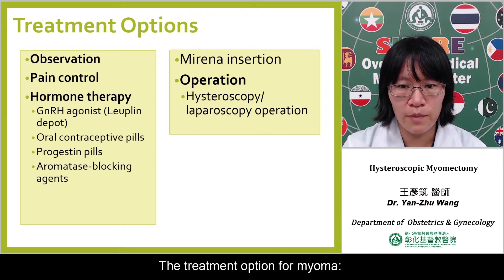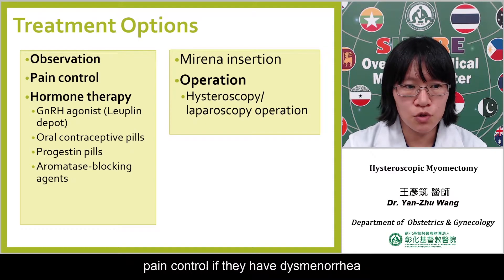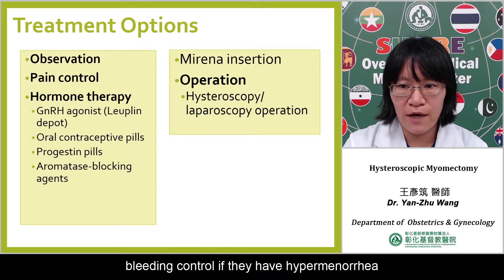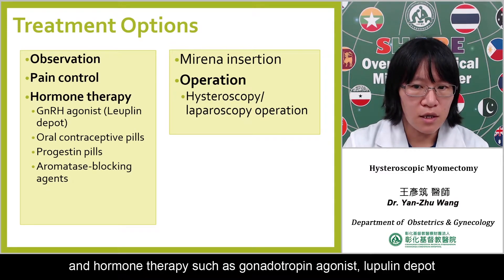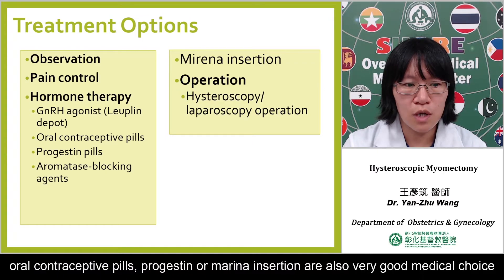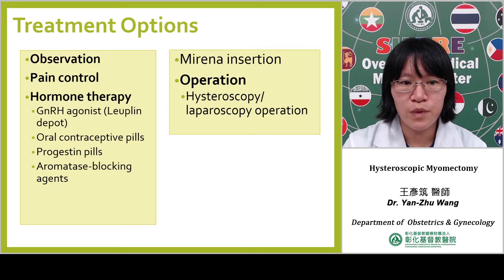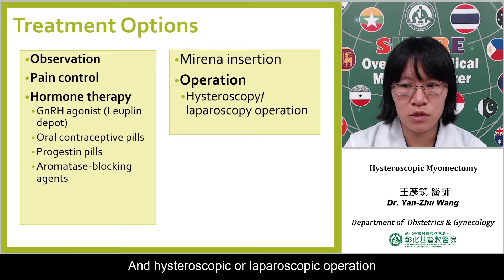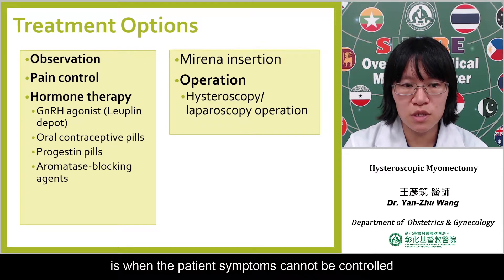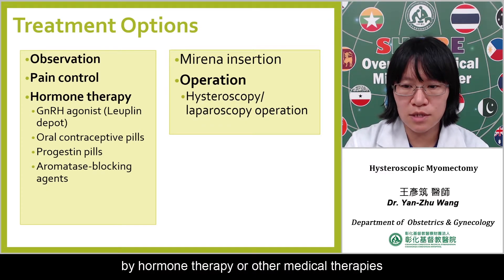Treatment options for myomas: observation if the patient has no symptoms; pain control if they have dysmenorrhea; bleeding control if they have hypermenorrhea. Hormone therapies such as GnRH agonist, leuprolide depot, oral contraceptive pills, progestins, or Mirena insertion are also very good medical choices. Hysteroscopy or laparoscopy operation is indicated when the patient's symptoms cannot be controlled by hormone therapy or other medical therapies.